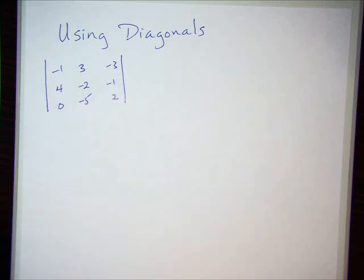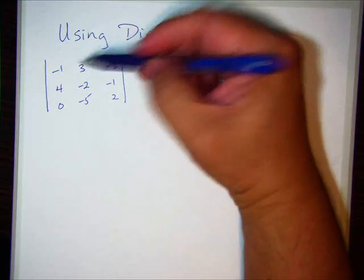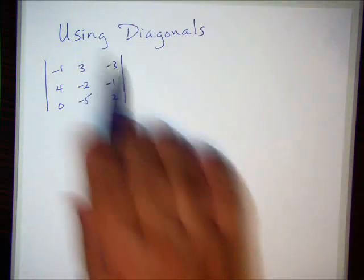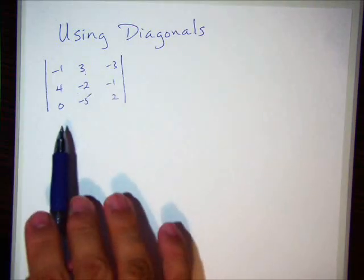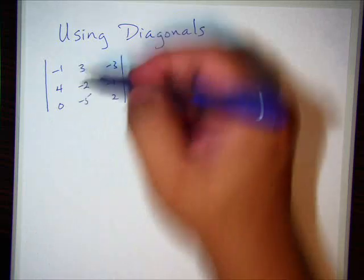We've already found a determinant of this, or have we? I don't know. Okay, all these numbers are running together to me. Anyways, I'm going to stop mumbling now. When using diagonals, what we're going to do is—this is the original matrix we want to find a determinant of.